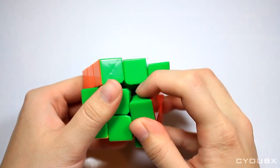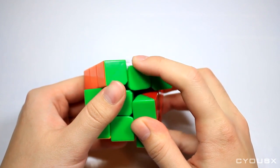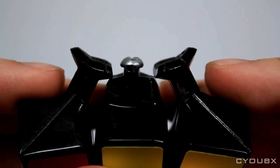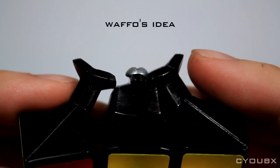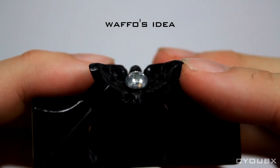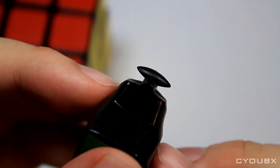The one downfall of the Gu Hong by today's standards is popping. Due to the lack of any torpedoes, the cube can pop at larger corner cuts. However, people were able to use screws to act like torpedoes, and this actually solved the popping issue completely. Years later, Diane also released the Gu Hong V2, which included the same torpedoes as the Xanxi.